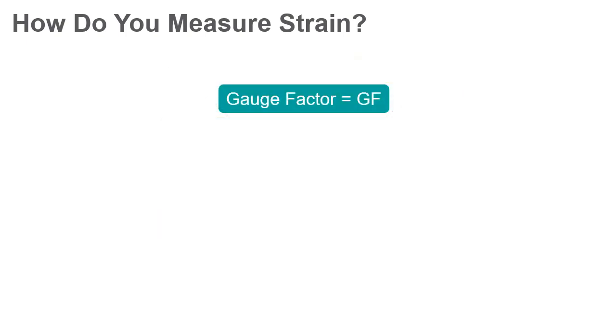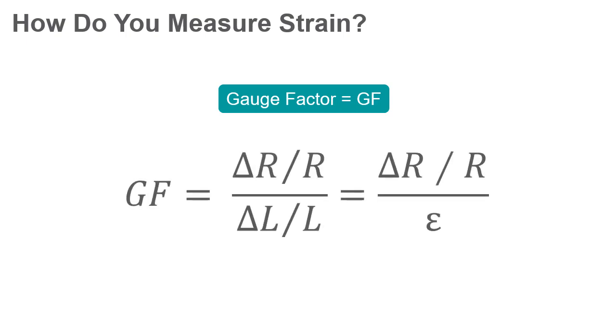A fundamental parameter of the strain gauge is its sensitivity to strain, expressed quantitatively as the gauge factor. Gauge factor is the ratio of the fractional change in electrical resistance to the fractional change in length, or strain. You can obtain the actual gauge factor of a strain gauge from the sensor vendor or sensor documentation.